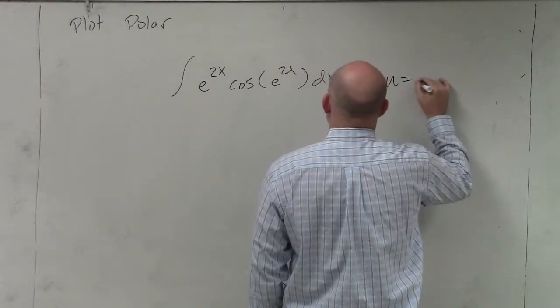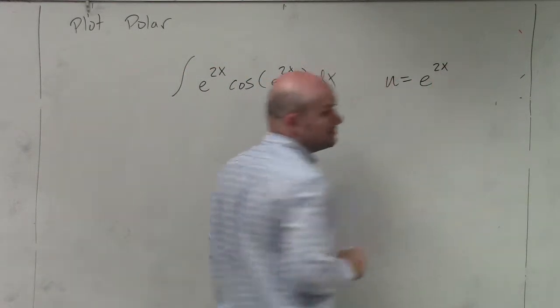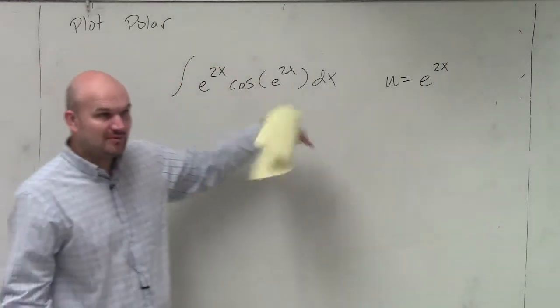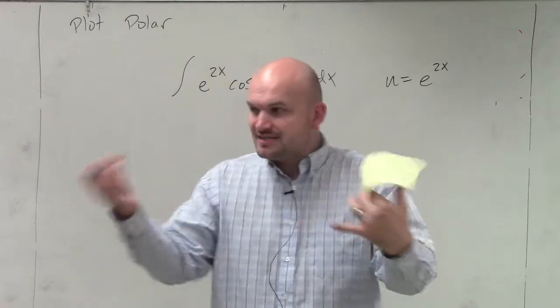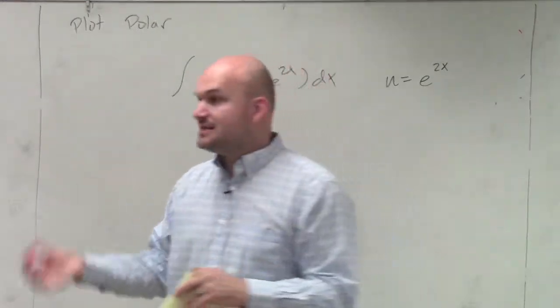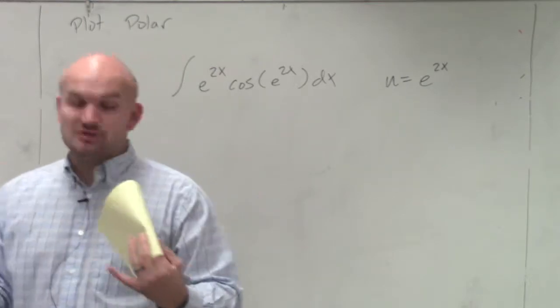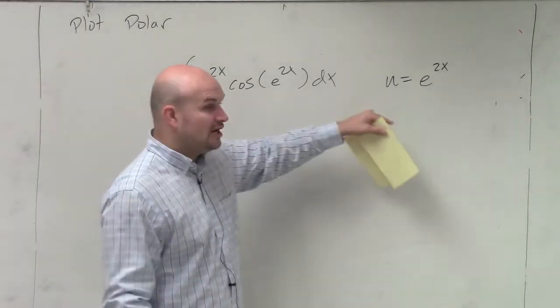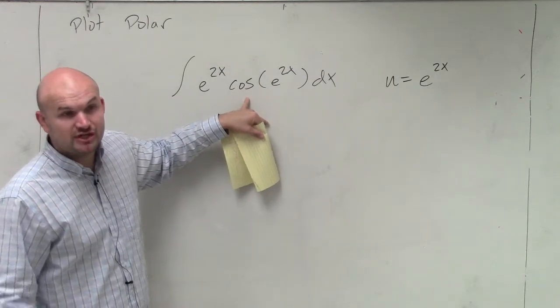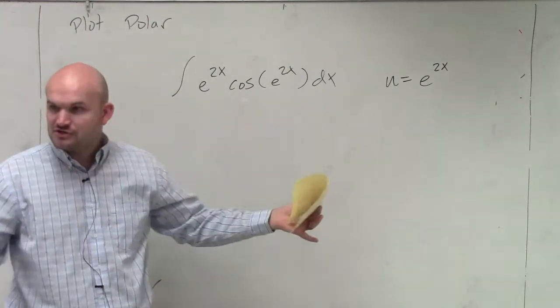I picked my same u. I said u is equal to e to the 2x, right? Because that u is inside of cosine. Remember we talked about a couple different things. Typically, we want to first look at the denominator if we have a rational expression. Second thing is if we look at a binomial squared, you want to look at that as u. Under a radical or inside of a trigonometric function are good ideas to look at first, to investigate first.